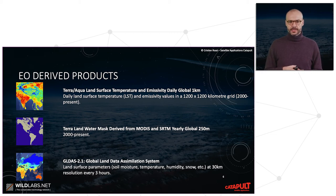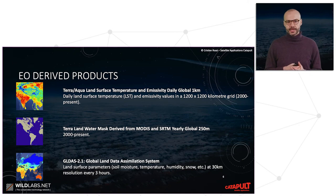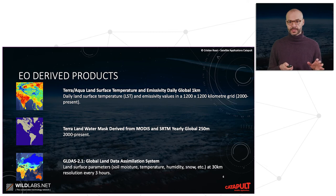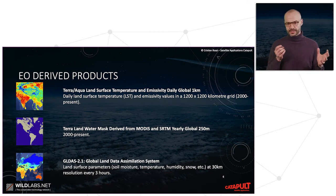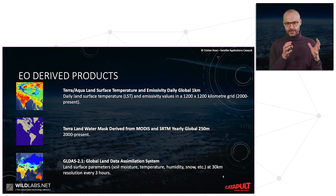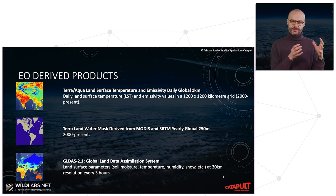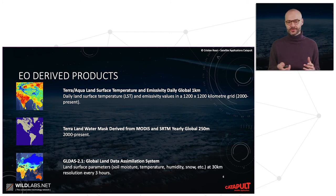Another product is GLDAS — the Global Land Data Assimilation System — with several land surface parameters at 30-kilometer resolution but updated every 3 hours. This illustrates the trade-off between resolution and time: the more timely the data, usually the coarser the resolution.